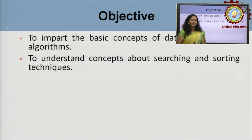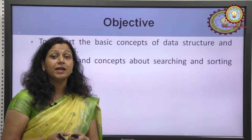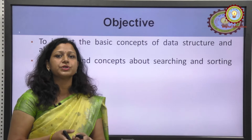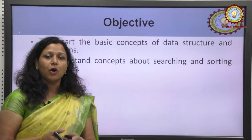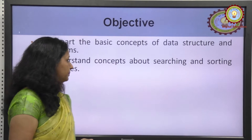For example, if we need to organize students' data in a college or school, there may be many students. We would organize it class-wise or by student roll number — that means we have applied sorting techniques. The third objective is to understand basic concepts about stacks, queues, lists, trees, and graphs. Those are the basic data structures.